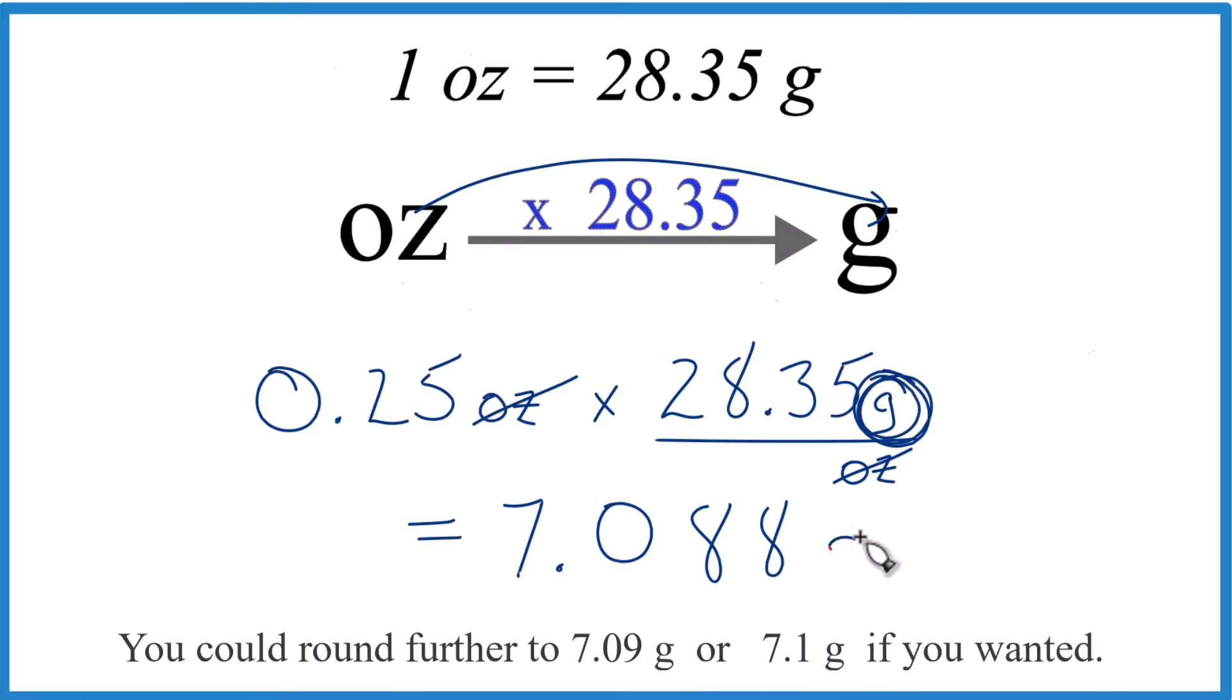And the units, those are the grams. So that's how you do it. That's how you convert one-fourth or one-quarter of an ounce to grams. Really, just get it to that decimal, multiply it by this factor here. You got it.